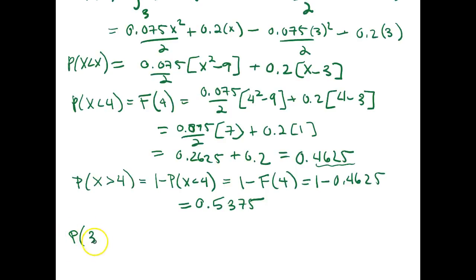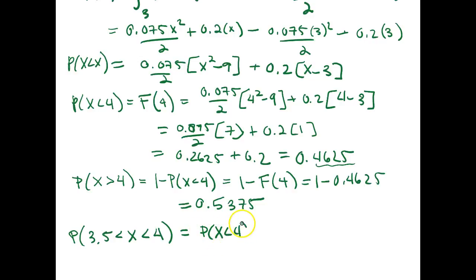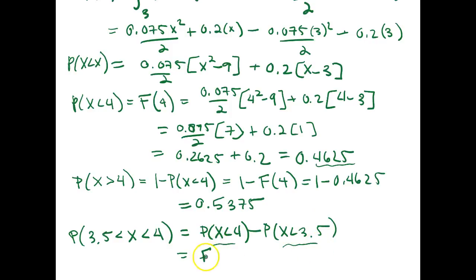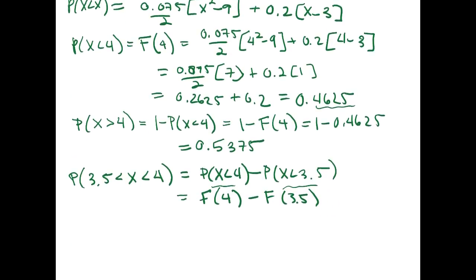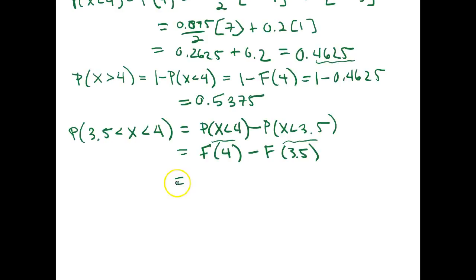So the probability that 3.5 is less than x is less than 4 equals the probability that x is less than 4 minus the probability that x is less than 3.5. This converts to F of 4 minus F of 3.5. We've already calculated F of 4 equals 0.4625, so we just need to evaluate the CDF at 3.5.